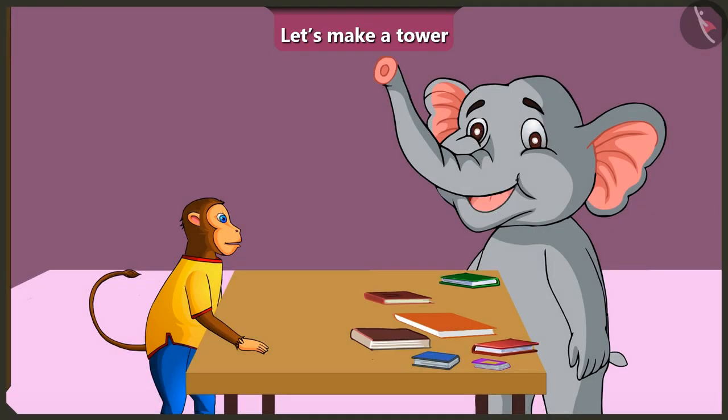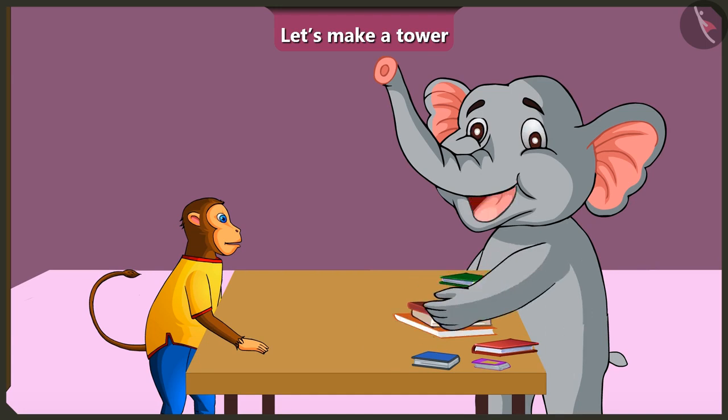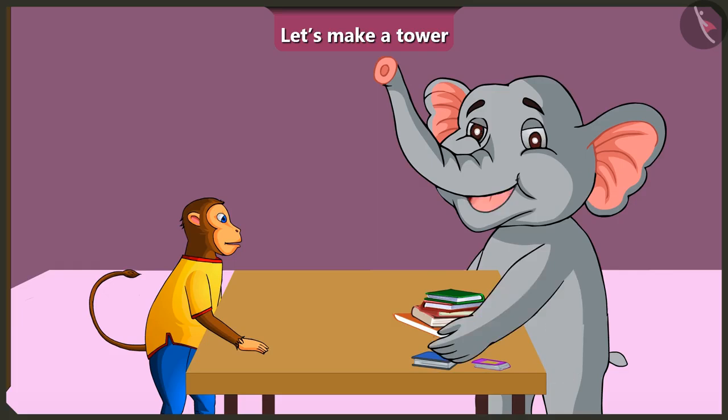Oh yes, now I understand that to build a tower, the bigger books should be placed at the bottom and the remaining books should be placed on top of them according to their size.